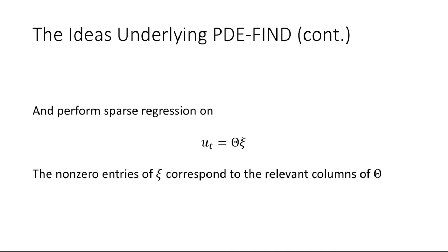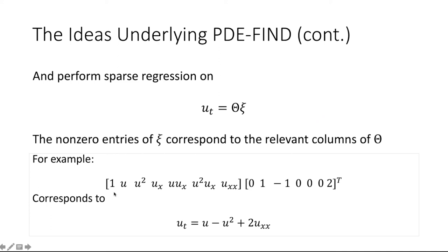As an example, consider a library of terms: 1, u, u², u_x, u·u_x, u²·u_x, and u_xx. If we infer the corresponding vector as 0, 1, −1, 0, 0, 0, 2, that would correspond to u minus u² plus 2·u_xx. As a mathematical modeler, I would identify that as the Fisher-KPP equation discussed earlier.